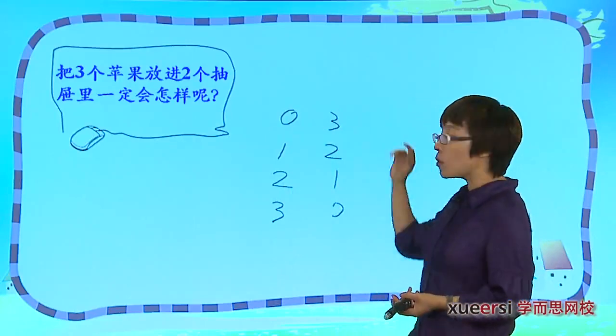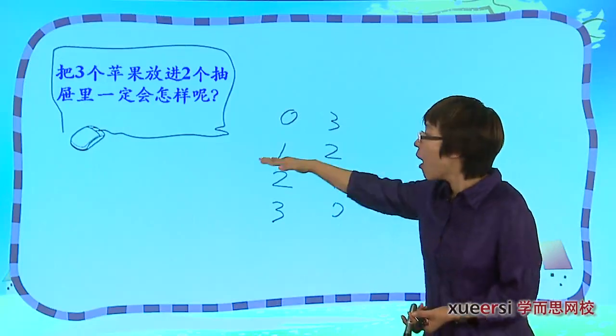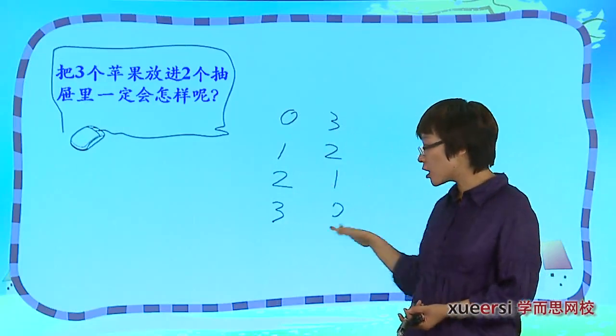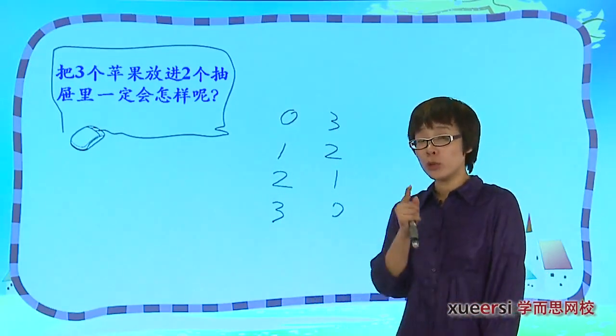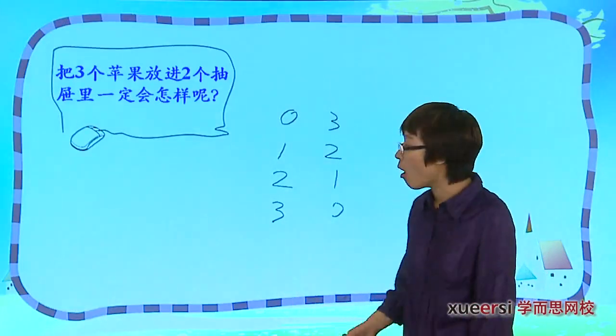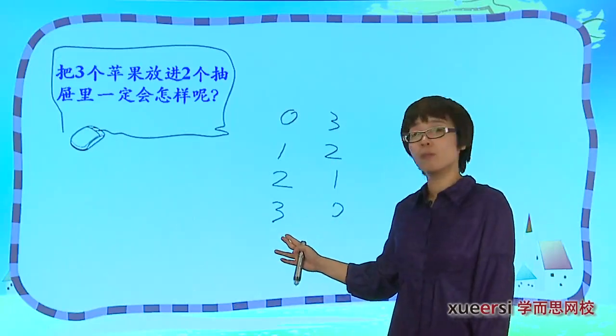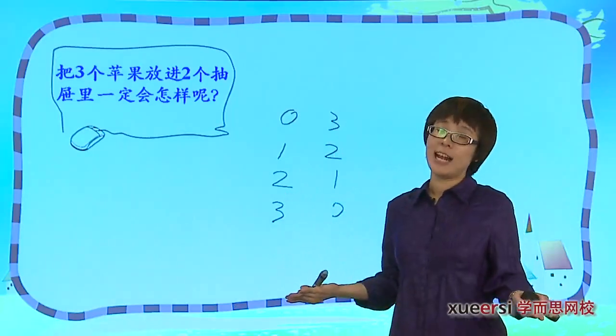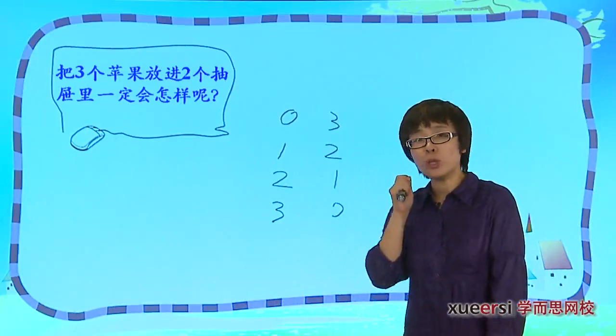你看，第一种情况当中，装苹果最多的那个有三个，第二种情况当中，装苹果最多的有两个，这儿也是两个，这是三个。也就是说明，装苹果最多的那个抽屉肯定不能太少。那至少也得有几个呢？一定是三个吗？不一定。最少是几个呢？两个。也就是说明，装苹果最多的那个抽屉至少会有两个苹果。